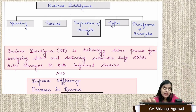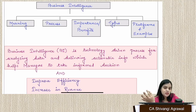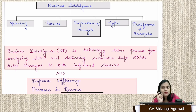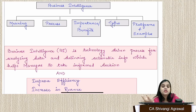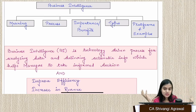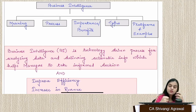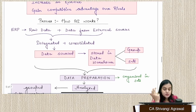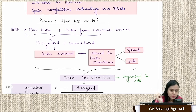For example, from 1 lakh sales records, if we find that 70% of consumers interested in a product are women, the marketing department can make an informed, targeted decision rather than relying on gut feeling or experience. Data-driven decisions help improve efficiency, increase revenue, and gain a competitive advantage over rivals.